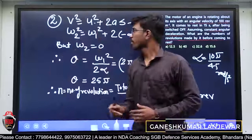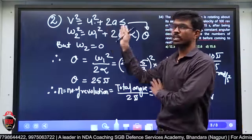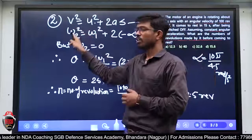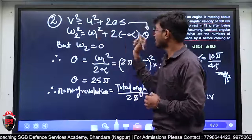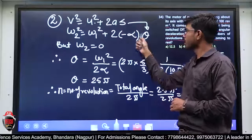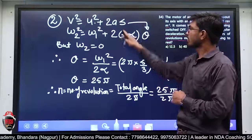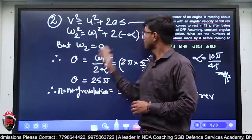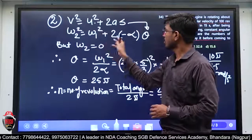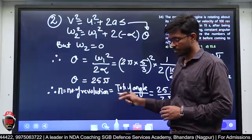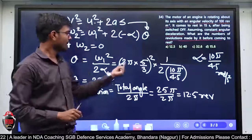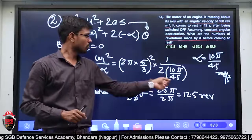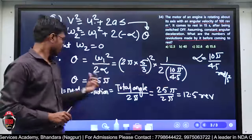अब दूसरी kinematic equation लिया: v² = u² + 2as — इसको angular में convert किया। Final angular velocity की जगह ω₂, displacement की जगह angular displacement θ put किया। Alpha retardation है तो minus alpha। ω₂ = 0, तो θ = ω₁²/(2α)। ω₁ = 2πn = 2π × 5/3, α = 10π/45 — value substitute की, θ मिल गया।